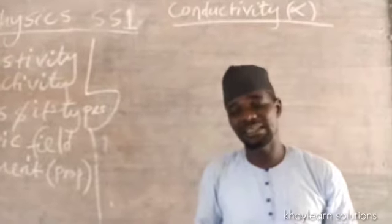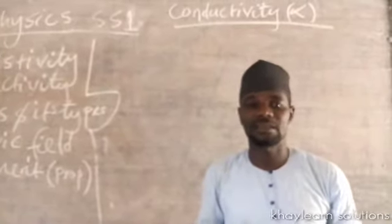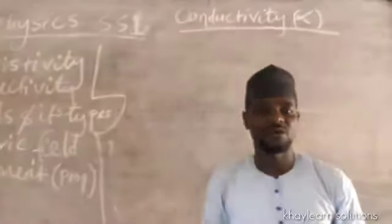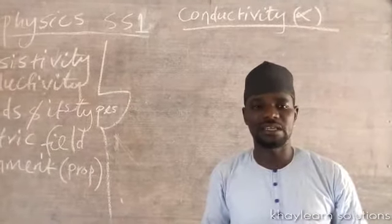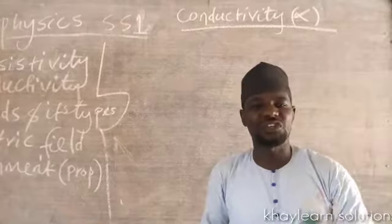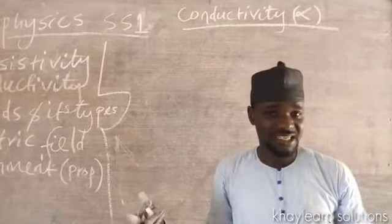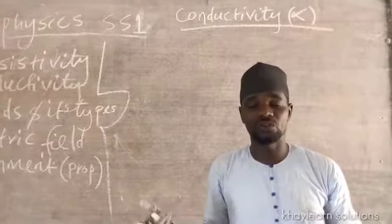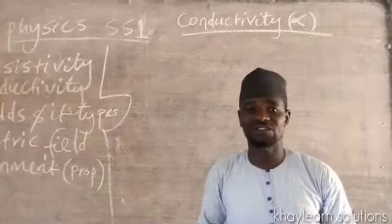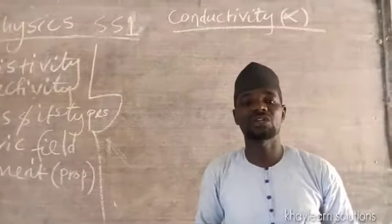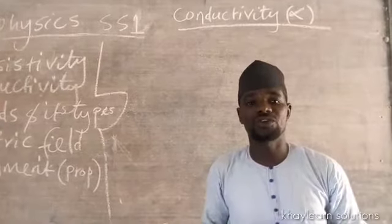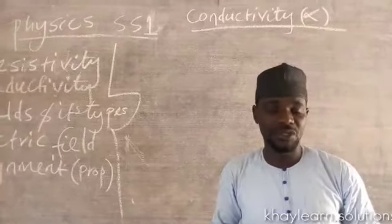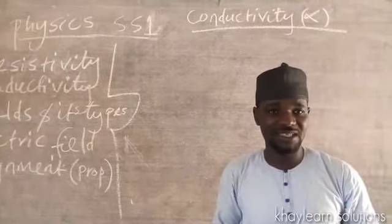Conductivity is different across metals. Some metals are very highly conducting, while others are fairly conducting, while some do not even conduct — something like wood, sand, plastic, and rubber do not conduct electricity. In this case, they are called non-conductors. They don't conduct at all.